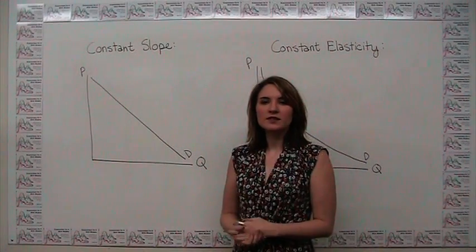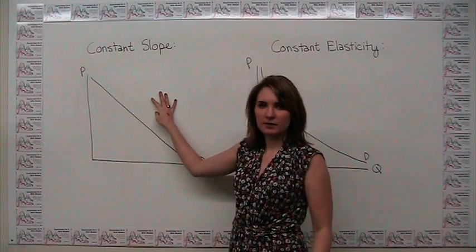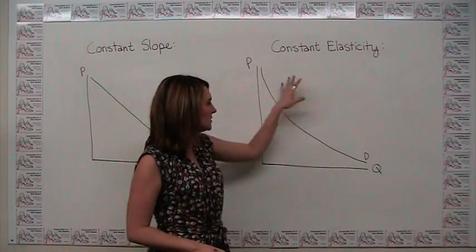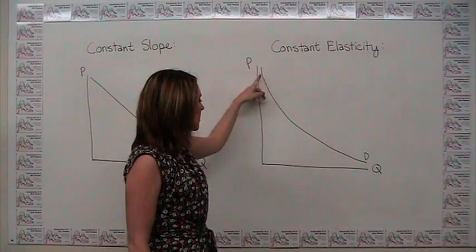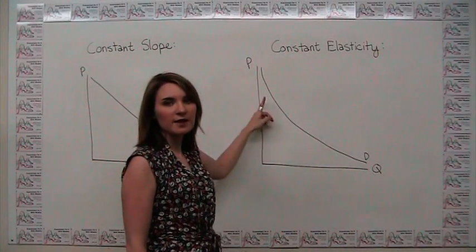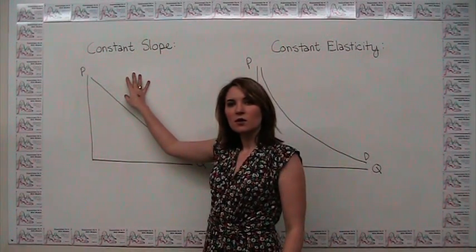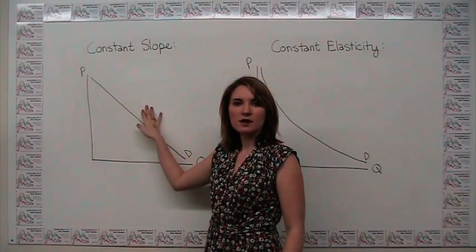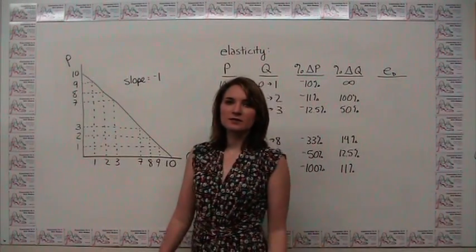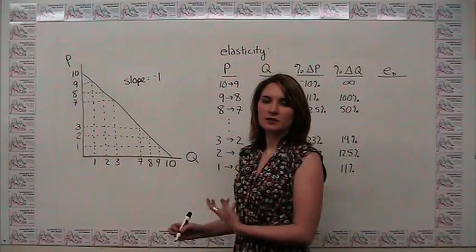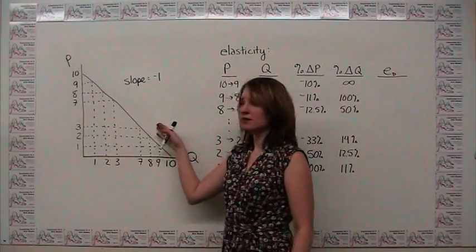To illustrate why it's important to think about elasticity at a particular point on the demand curve, let's contrast a constant-slope demand curve — which is a straight line — to a constant-elasticity demand curve, which is not a straight line and is in fact bowed in toward the origin. Because we usually deal with straight-line demand curves, we need to specify from and to what point we're talking about when we refer to elasticity of demand.